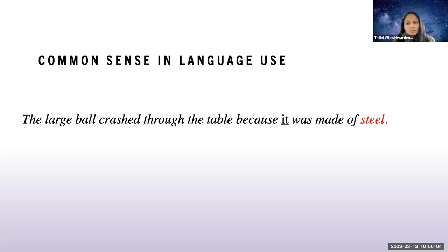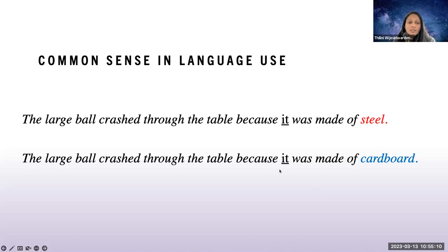We don't think of it as referring to the table. It's just common sense that heavy metal things can break through items not made of metal. Interestingly, the reasoning is quite different if we just change one word. The large ball crashed through the table because it was made of cardboard. Now what does it refer to? It's not anymore the large ball, it's the table now, because we changed the word steel to cardboard.